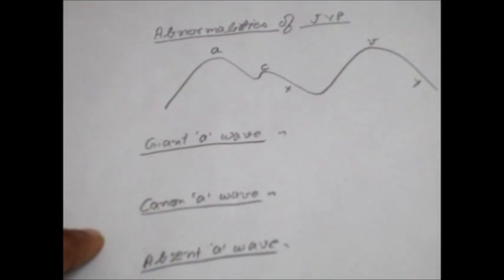Now we do remember how the A-Waves are formed. A-Waves are formed due to the contraction of the right atrium which pushes blood from right atrium to right ventricle.